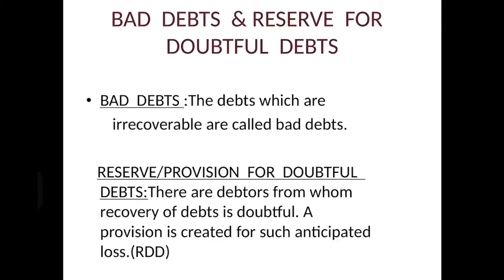The next is reserve and provision for doubtful debts. There are debtors from whom the recovery of debts is doubtful — we are not sure whether we are going to get that money from debtors or not. So we will provide for such loss which may take place. A provision is created for such anticipated loss. Again, profit and loss account debit side, and the second effect is you deduct from debtors.